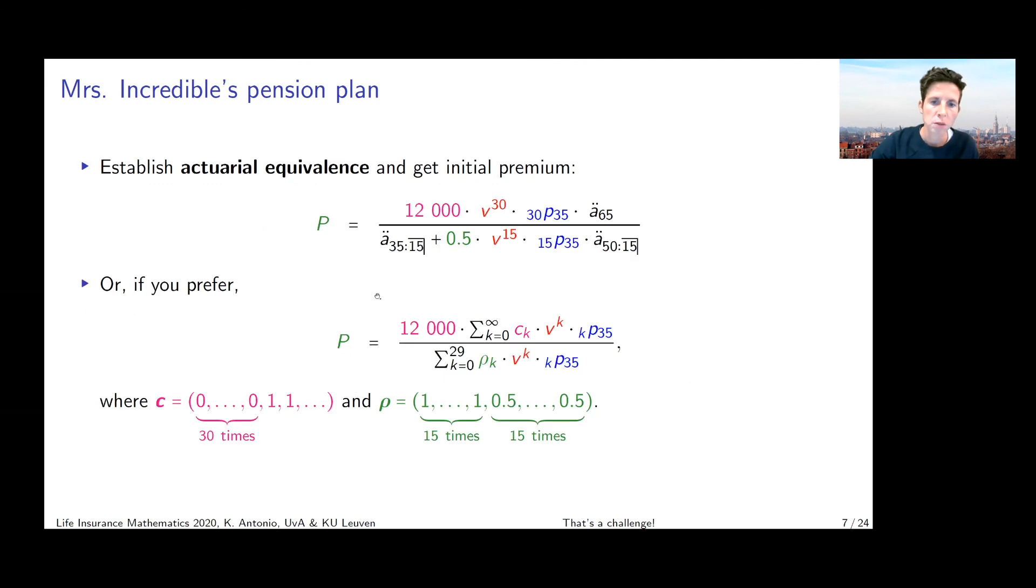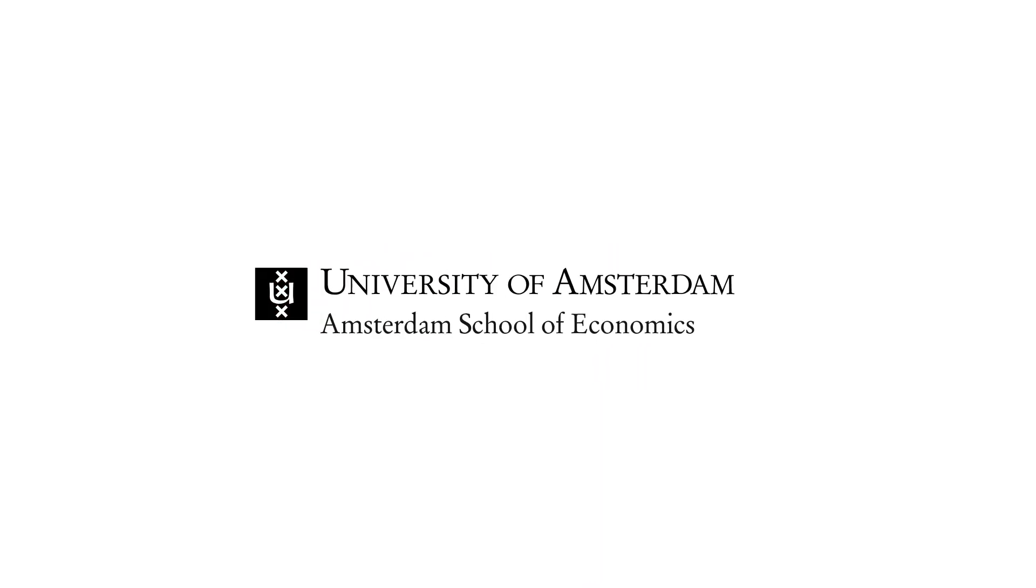If we jump to the EPV of the life annuity benefits, then we know we're dealing with a deferred life annuity issued to a 35 year old. The deferred period is 30 years because the first payment has to start at age 65. If she's alive at that time, the annual benefit is 12,000 euros. So to value this, we use our knowledge.